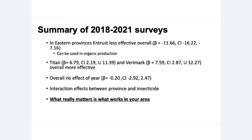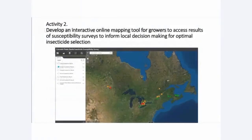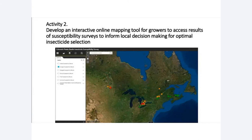Thank you, Ian. The next portion of the presentation will look at Activity Two — the development of an interactive online mapping tool for growers to access survey results and help inform local decision-making for optimal insecticide selection. Here is an image of the online mapping tool; I'll go through it in detail in the following slides.